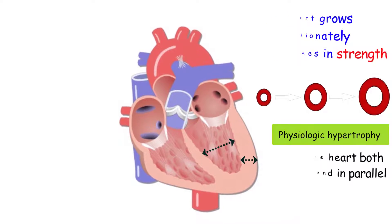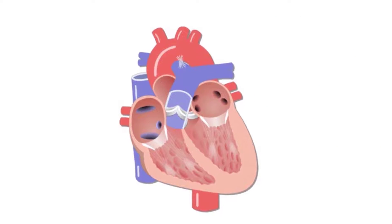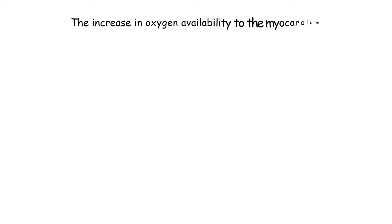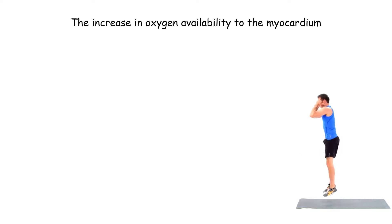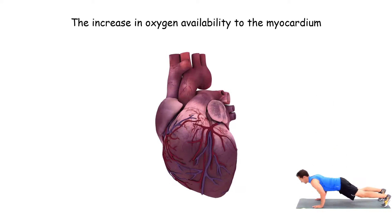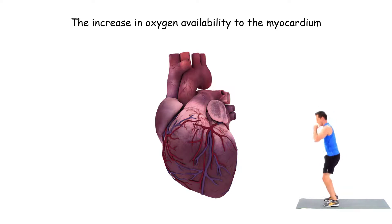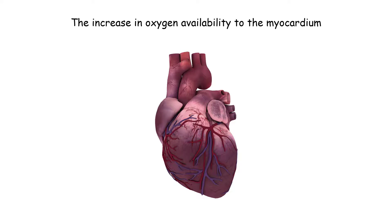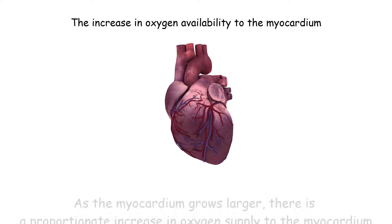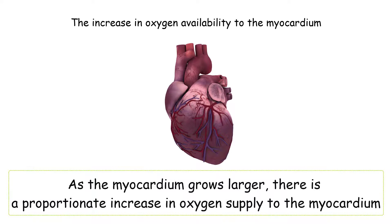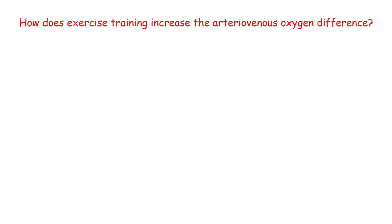Another distinction between pathologic and physiologic hypertrophy is the increase in oxygen availability to the myocardium in response to aerobic exercise training. As the myocardium grows larger, new capillaries grow as well, resulting in an increase in the number of capillaries around the myocardium. Similar to the concept of proportionality just explained, this ensures that as the myocardium grows larger, there is a proportionate increase in oxygen supply to the myocardium.